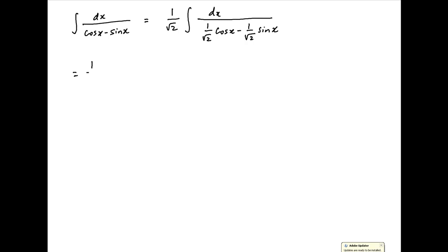This can be written as 1 upon root 2 times integral dx upon sin of pi upon 4 cos x minus cos of pi upon 4 sin x. And this is equal to 1 upon root 2 integral dx upon sin of pi upon 4 minus x.